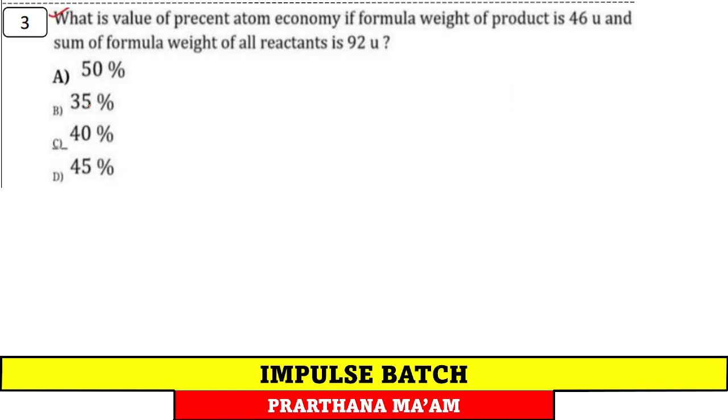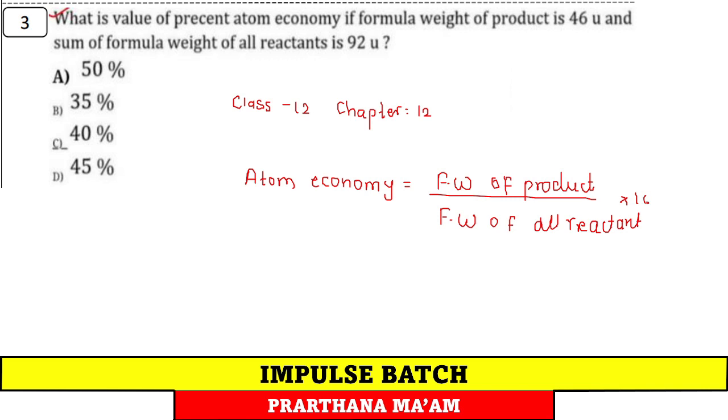Next, question number 3. What is value of percent atom economy if the formula weight of product is 46 and sum of formula weight of all reactant is 92? Atom economy is from class 12 chapter 16 green chemistry. Formula is formula weight of product upon formula weight of all reactants. Given is 46 dalton divided by 92 dalton multiplied by 100, which is 0.5 into 100. Answer is 50%, option A.